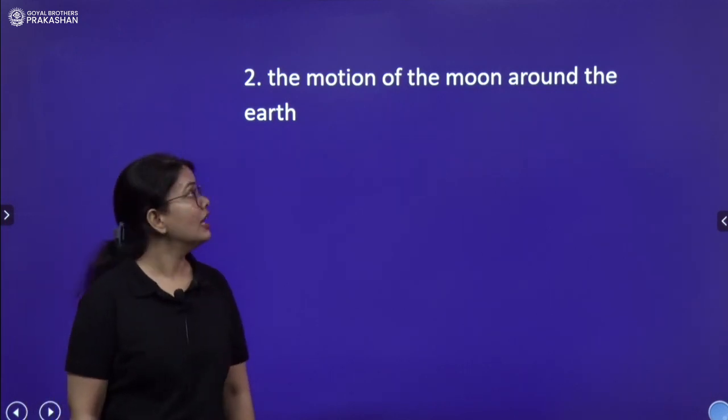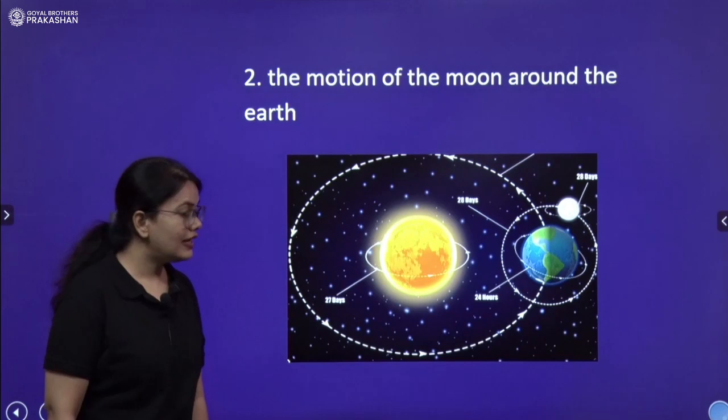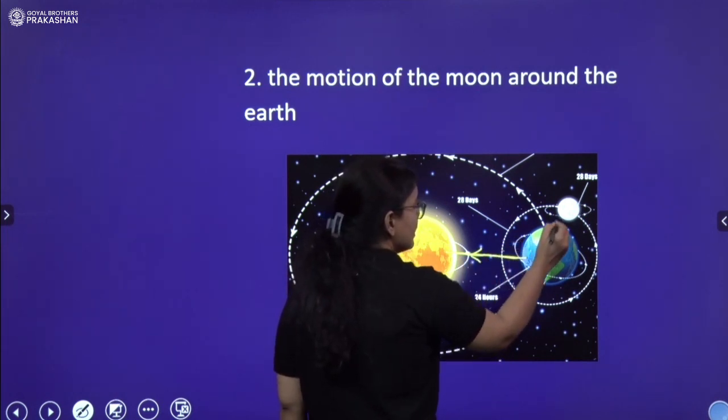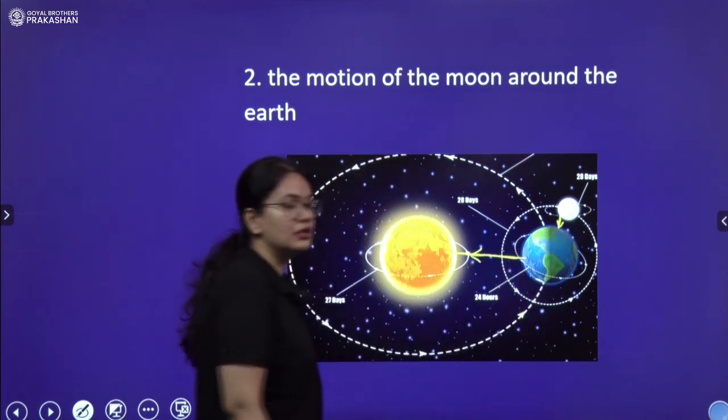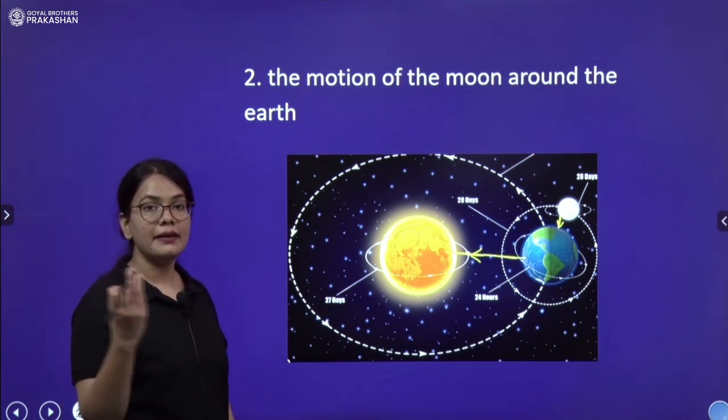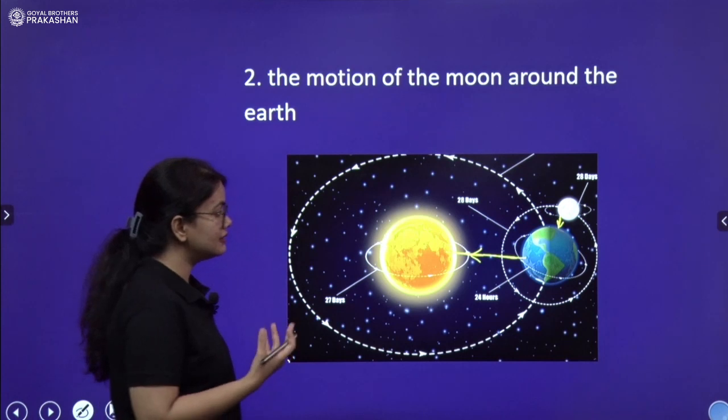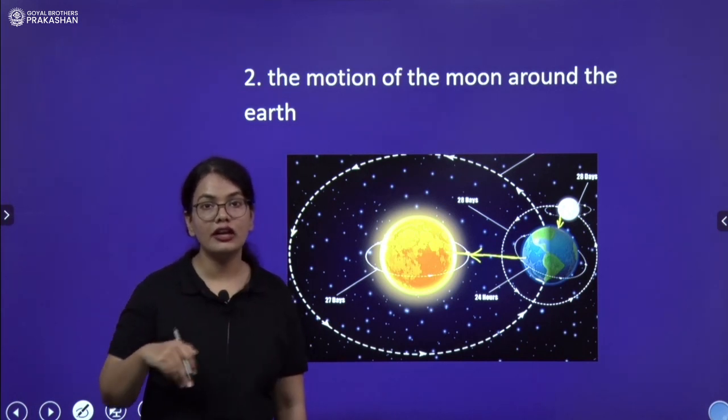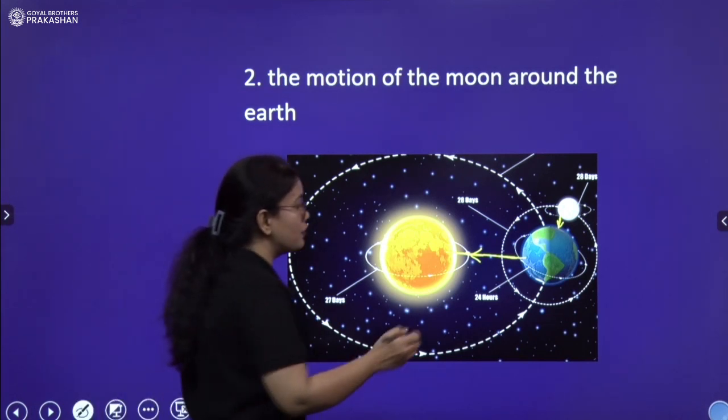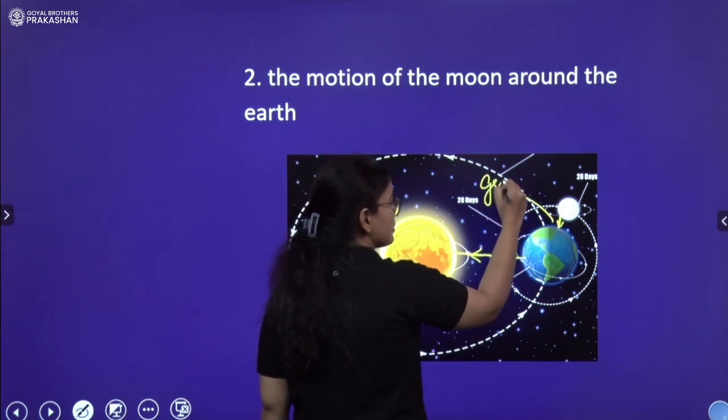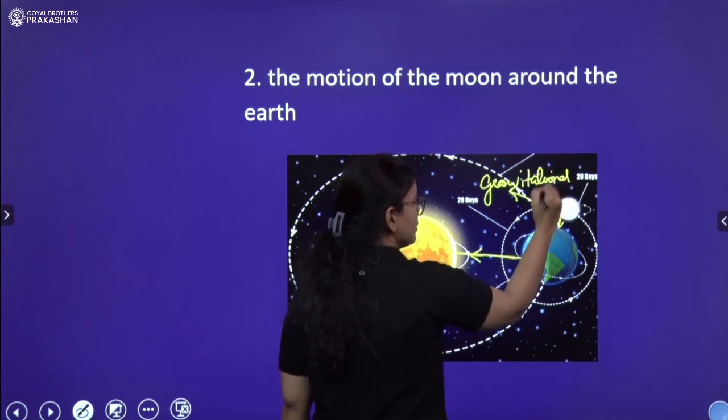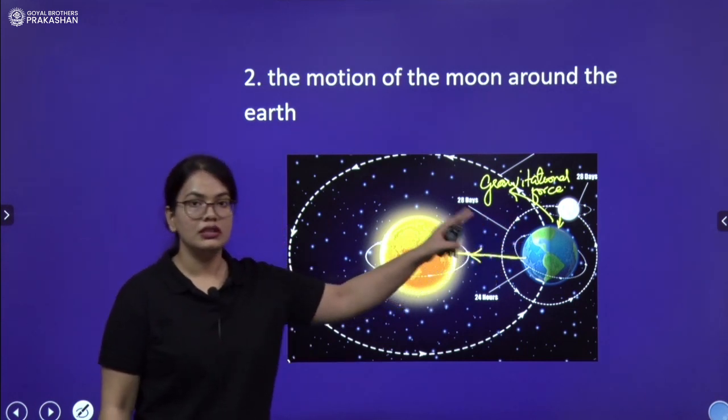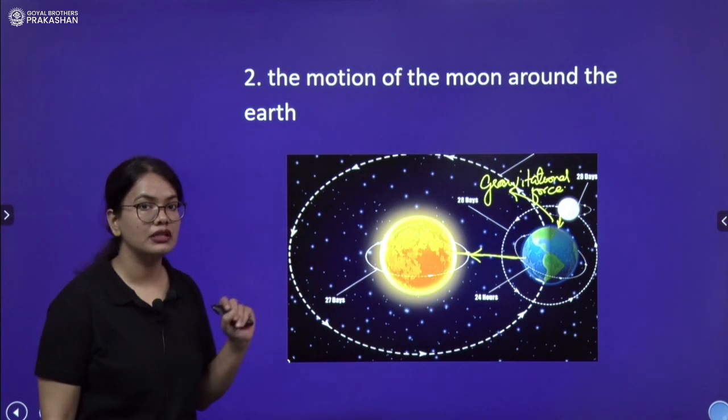Next is the motion of moon around the earth. We have already discussed that there is a centripetal force between sun and earth and earth and moon. And the centripetal force keeps these planets, let us say the centripetal force between earth and moon enables moon to make a circular orbit around the earth. And that centripetal force is coming from the gravitational force of attraction. It is this gravitational force, the pull between earth and the moon that is providing the centripetal force and enabling the circular orbital motion.